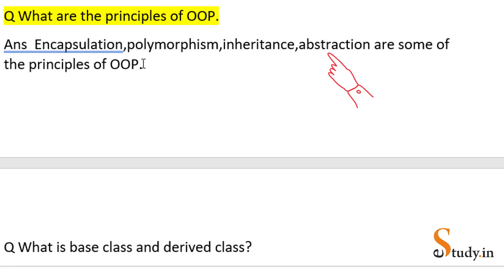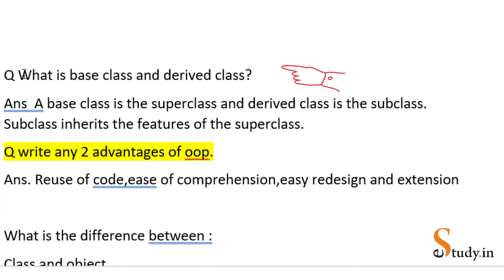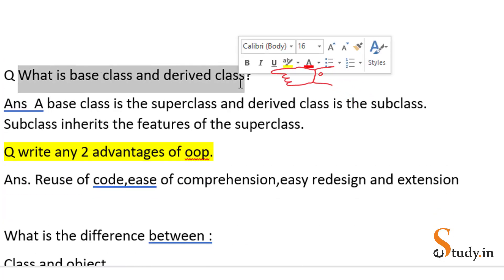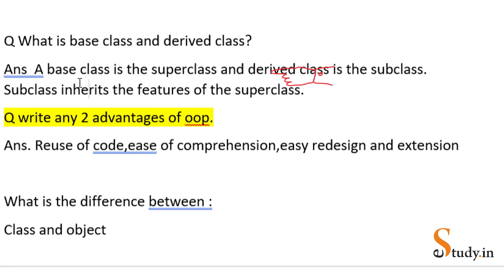Now the next question which can be asked is 'What is base class and what is derived class?' Here we can say a base class is also called super class and derived class is called the subclass. The subclass inherits the features of the super class. You can add one more line if you want: that super class is the class from which the subclass inherits the features.